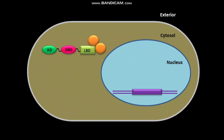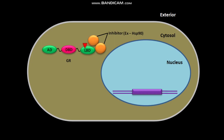In the absence of hormone, the glucocorticoid receptor (GR) is kept in the cytosol by interaction between its ligand binding domain (LBD) and inhibitor proteins like HSP90. When the hormone is present exterior to the cell, it diffuses into the cytosol and binds to the LBD of GR. Due to this hormone binding, the LBD of GR undergoes a conformational change. As a result, the LBD-bound inhibitor gets separated.